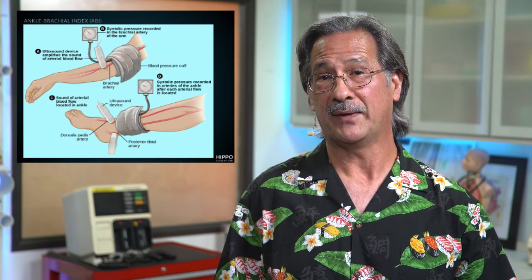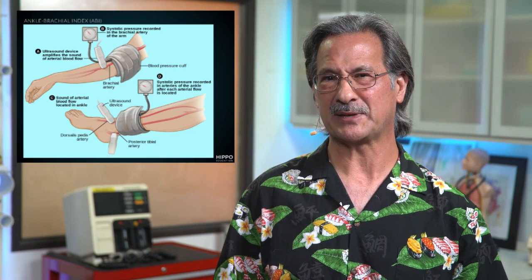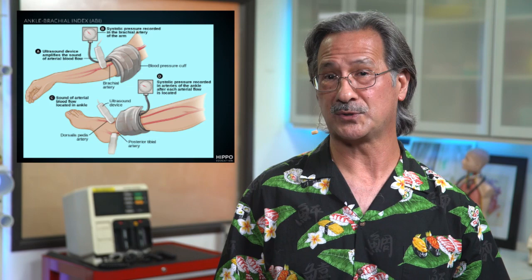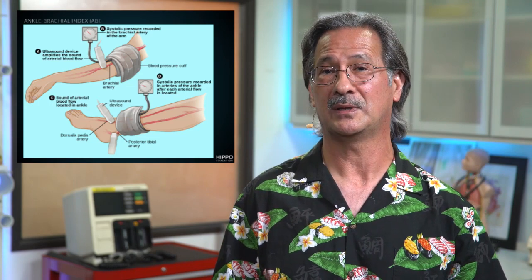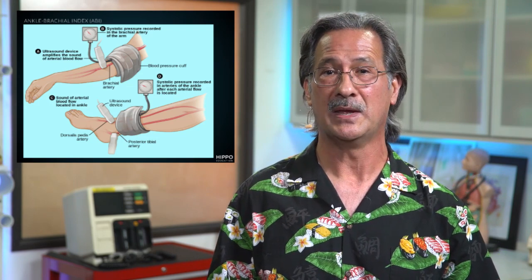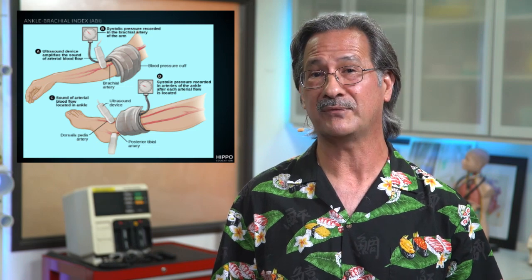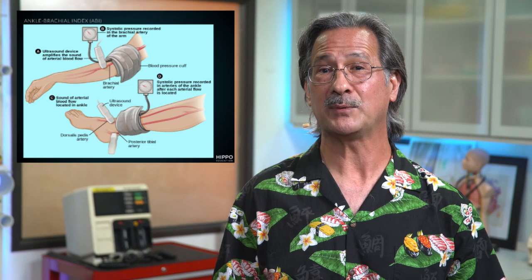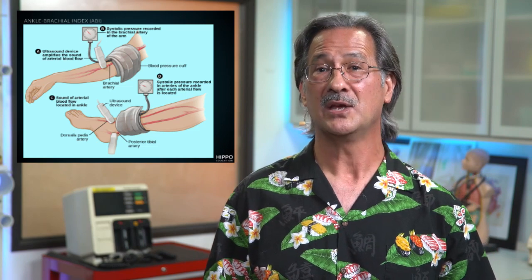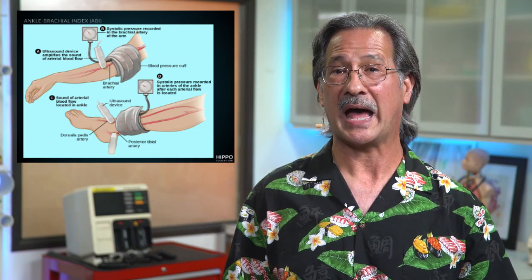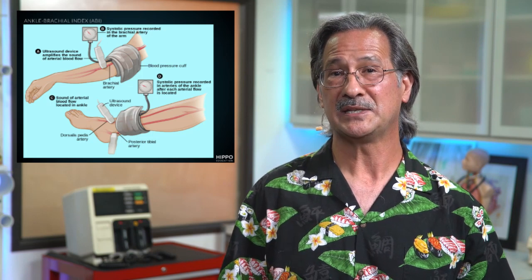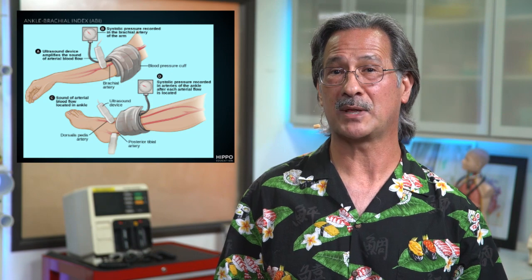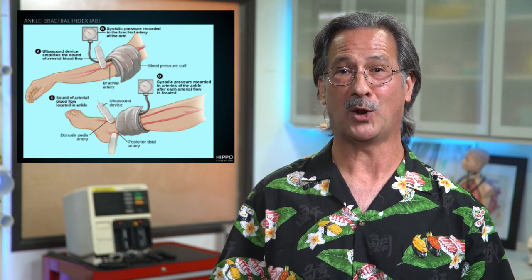Similarly, we measure the systolic blood pressure in the leg, taking measurements over both the dorsalis pedis as well as the posterior tibial arteries. We inflate the cuff and then make determinations of the pressure in both of those arteries, and we take the higher of those values. So to calculate the ABI, we take the highest of the ankle pressures, divide that by the highest of the right or left systolic blood pressures in the arm, and we get our ABI.